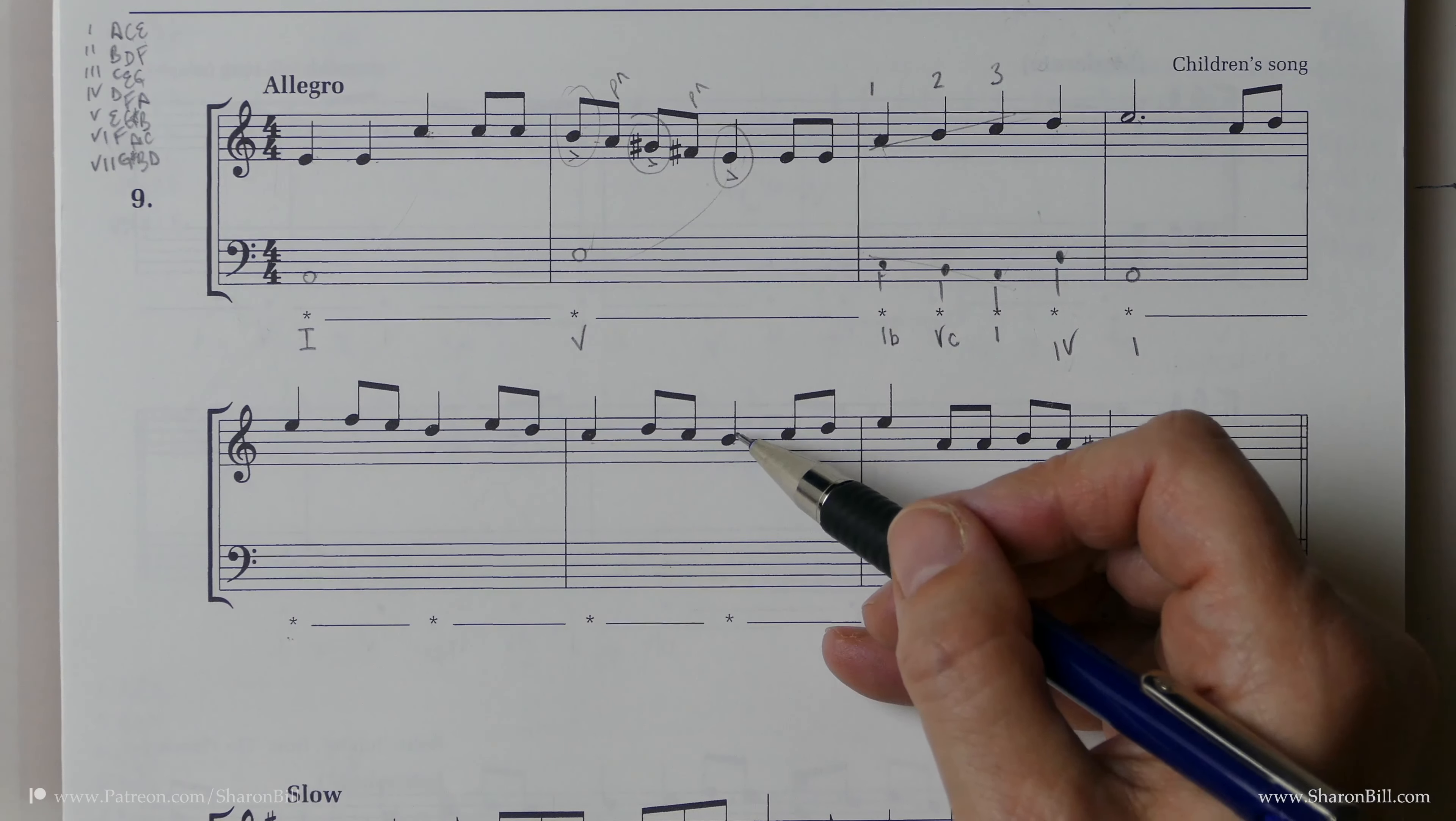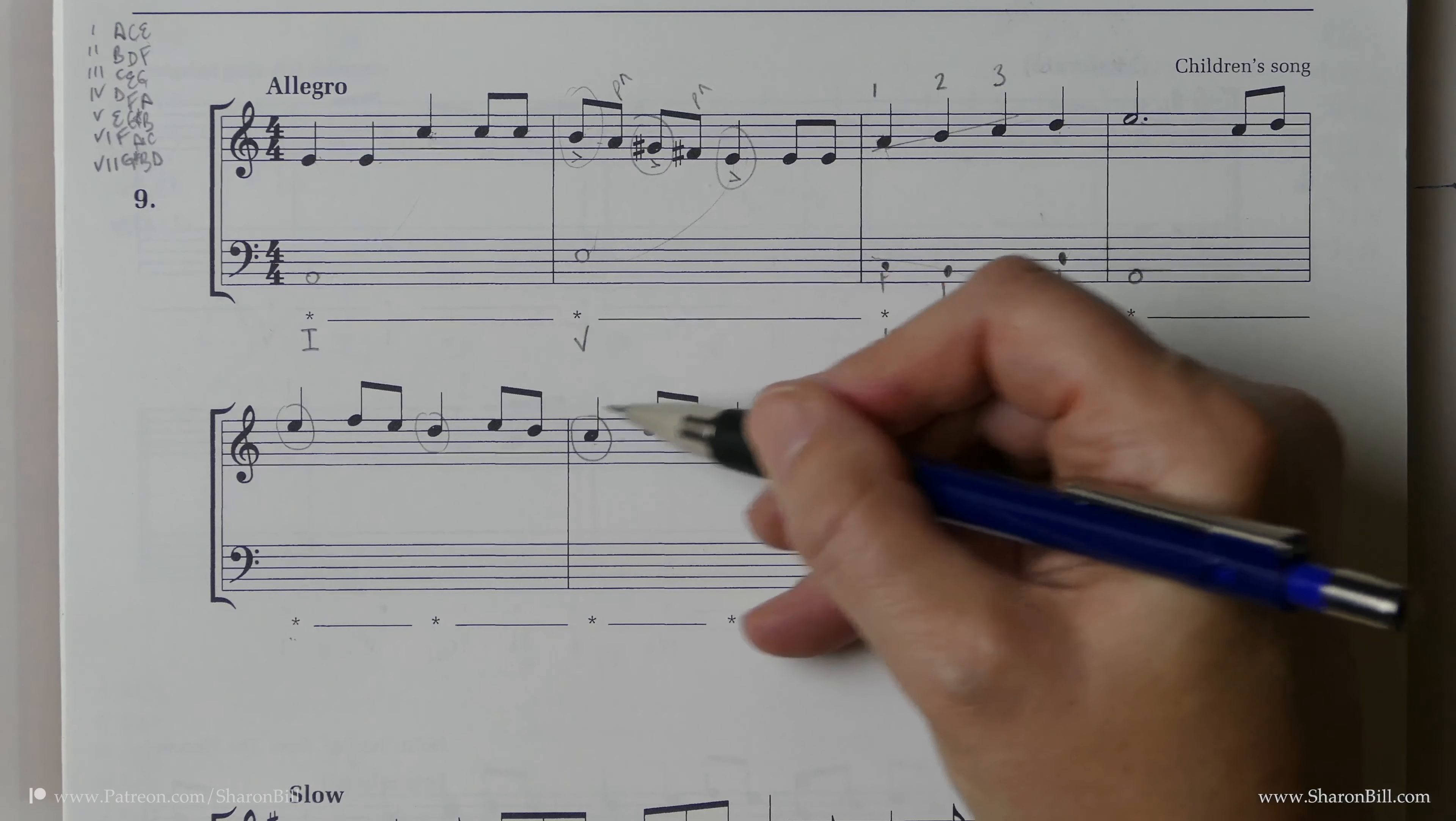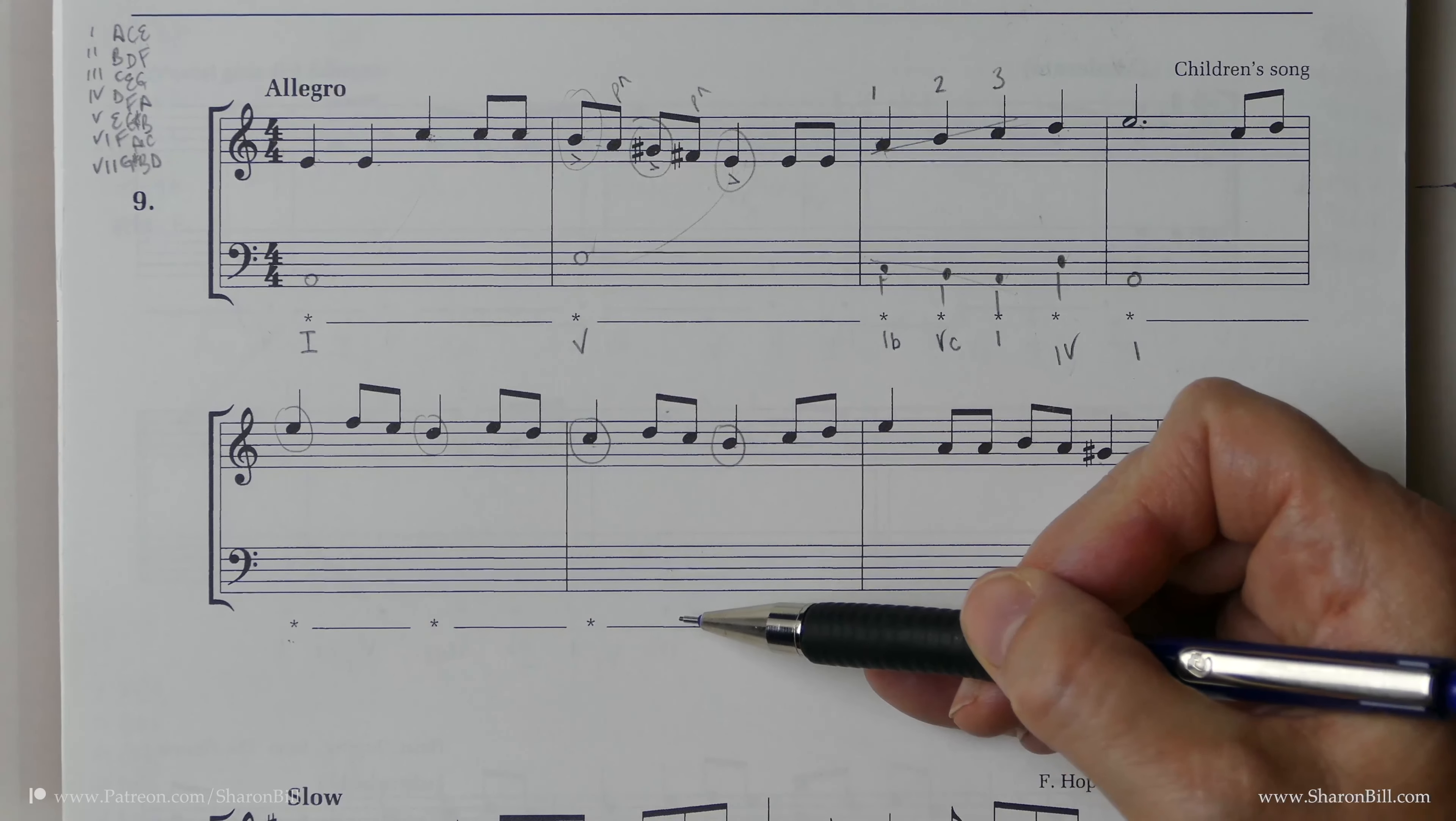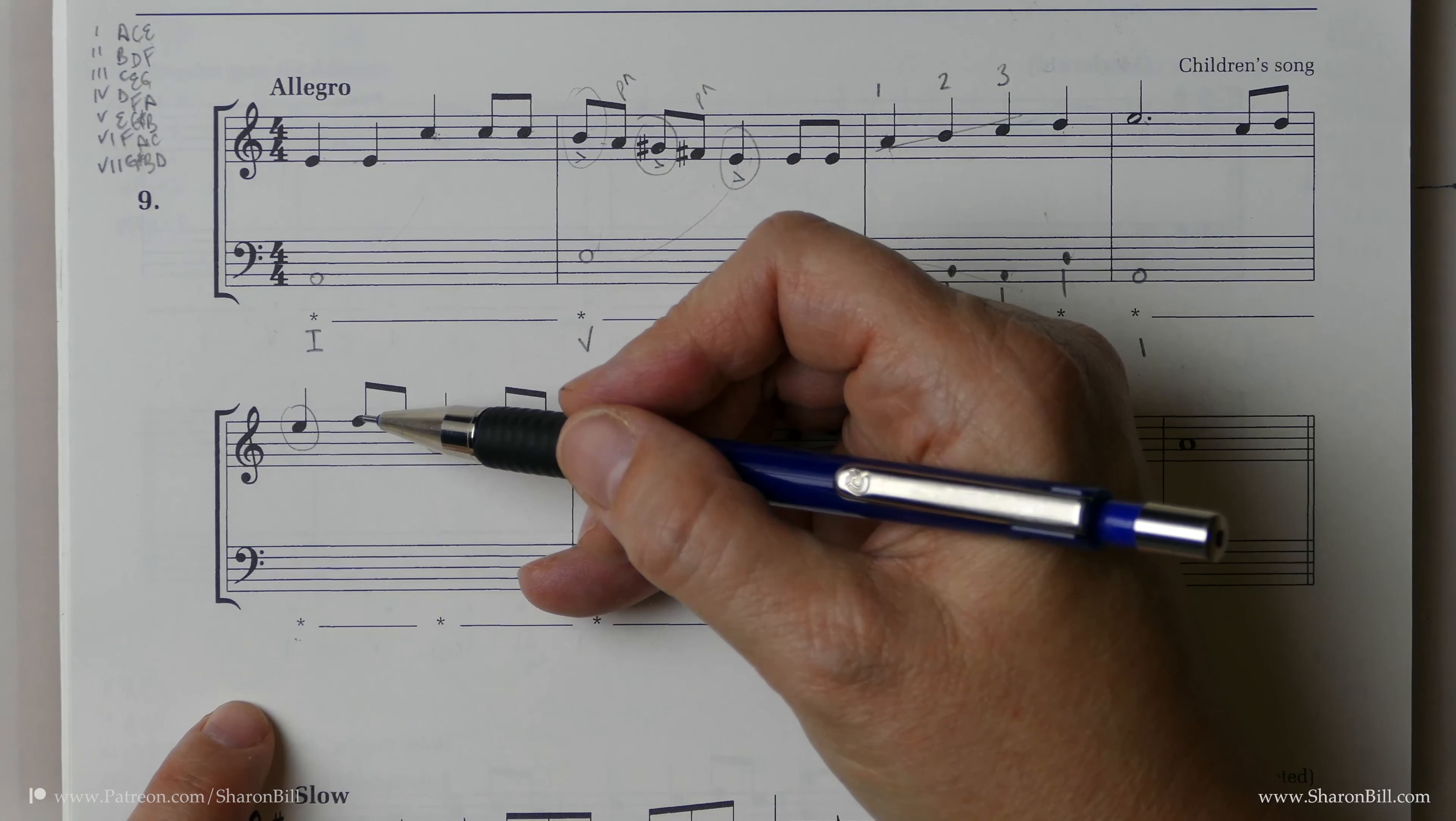However, there's a nice little opportunity here because we have this E, D, D, C, D, B. We have this nice little descending sequence. And if we can shadow that in the bass line, so long as it's not creating consecutives, we of course don't want stepwise consecutive fifths or octaves. But so long as it's not creating consecutives,